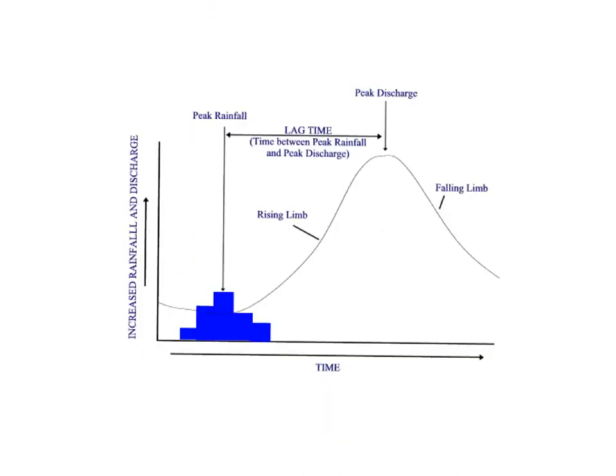We're now going to learn about the individual elements of a hydrograph. Where you have the highest amount of rainfall on a hydrograph, this is known as peak rainfall, and where you have the highest amount of discharge, this is known as peak discharge.